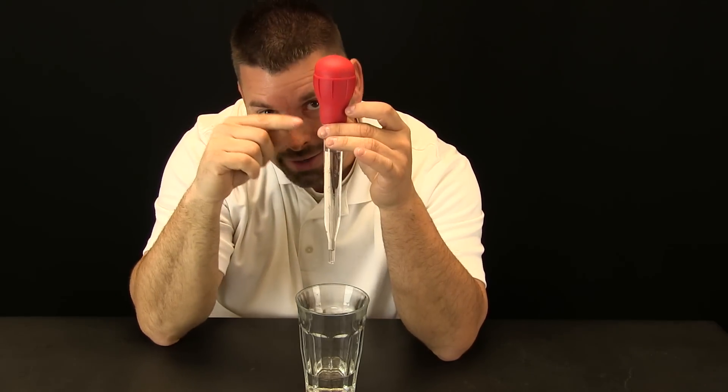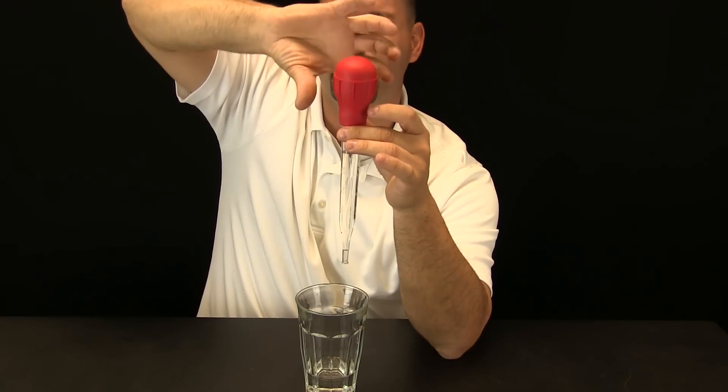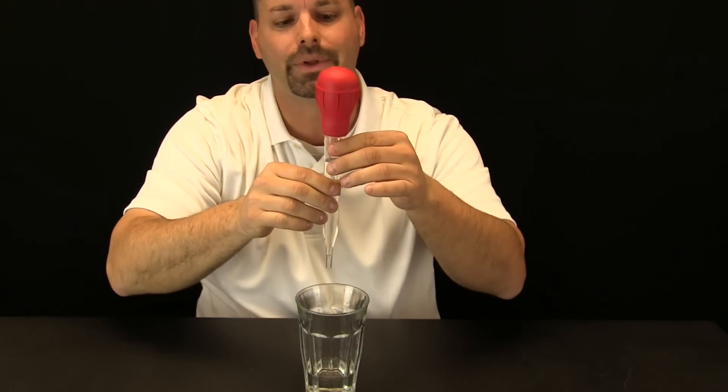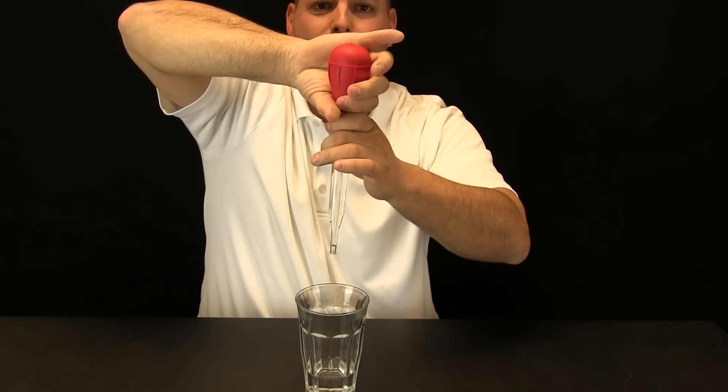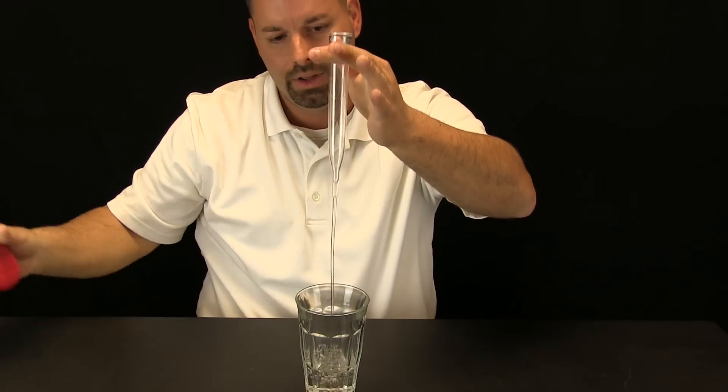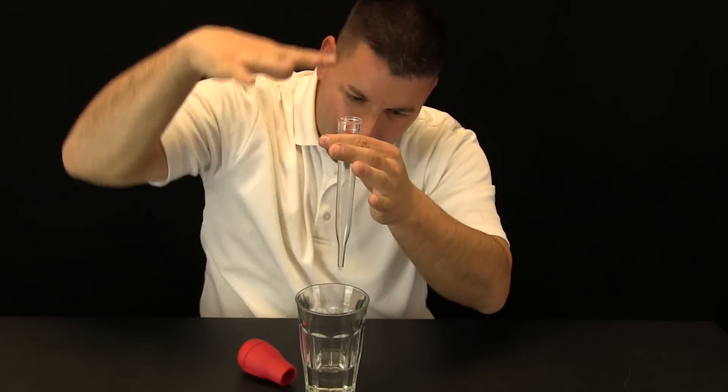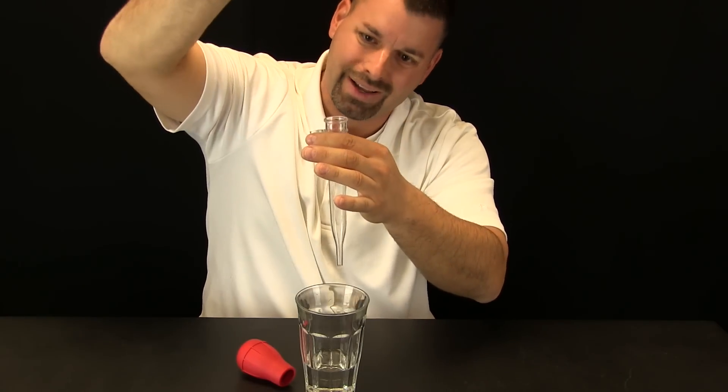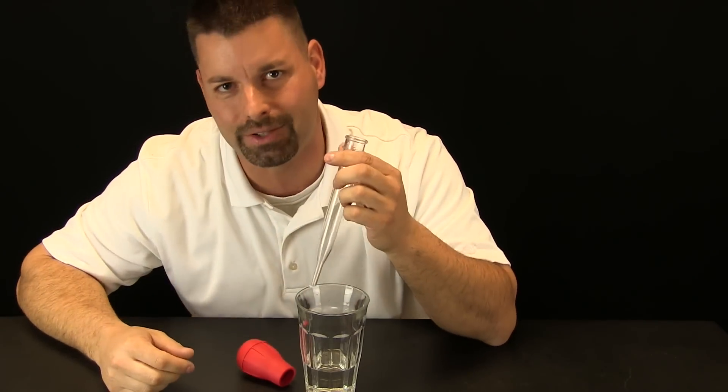Well, how can I let air get into the top of the turkey baster? I can pull the red bulb off and let us see what happens. So what do you think will happen? Here we go. I will pull it off as fast as I can and the water was pushed out. All the air pressure got into the top and pushed it out of the turkey baster.